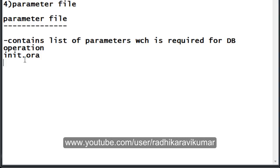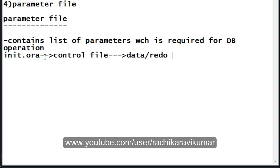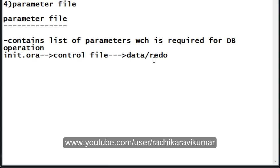From init.ora, it fetches the control file location. As we know, the control file holds the location of the data files and redo files. So whenever the database starts up, the parameter file is the first file opened. Then it reads the control file location, goes to that control file, and from there picks where the redo and data files are situated and opens them. This is how all the files get opened during database startup.